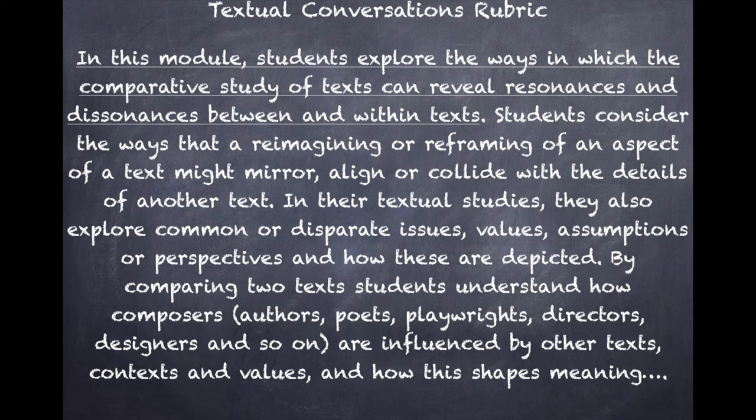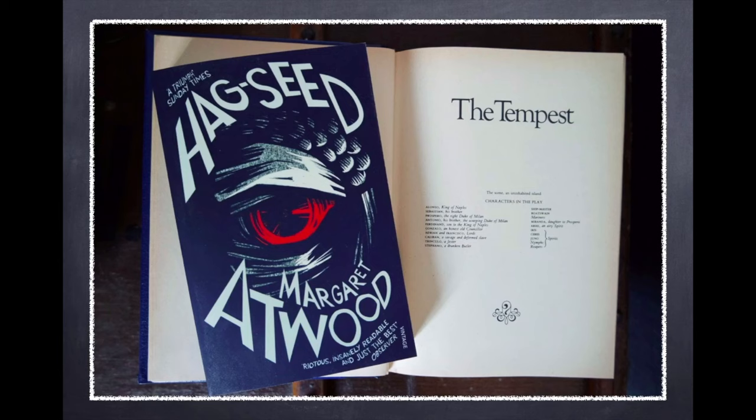As always, we should revise the module rubric. The rubric begins with the directive: explore the ways in which the comparative study of texts can reveal resonances and dissonances between and within text. The re-contextualisation of Shakespeare's classic play into a novel set in modern day Canada offers rich opportunities to do just this.